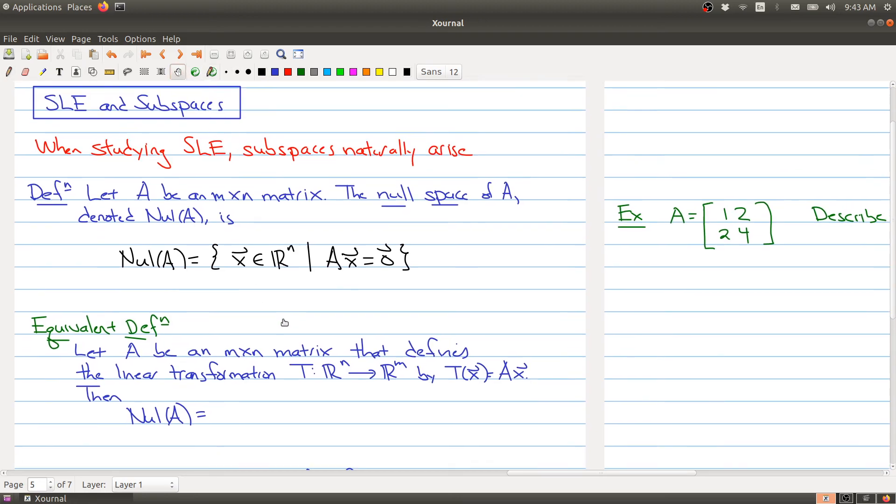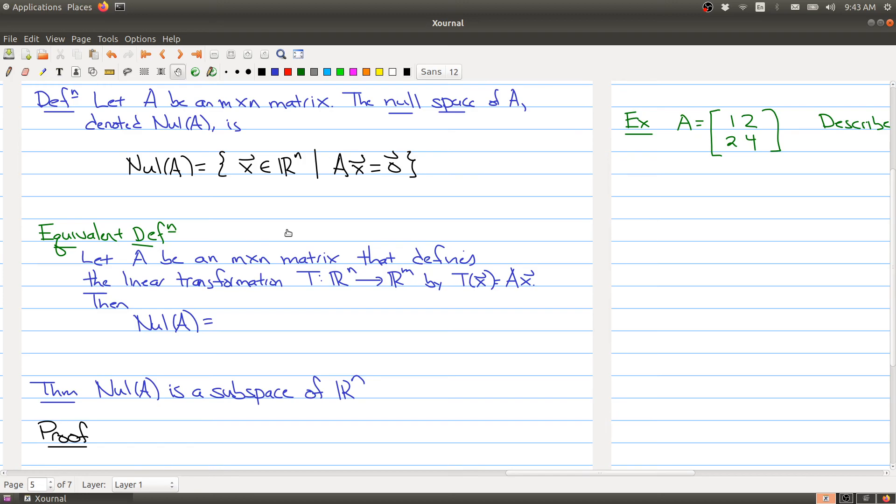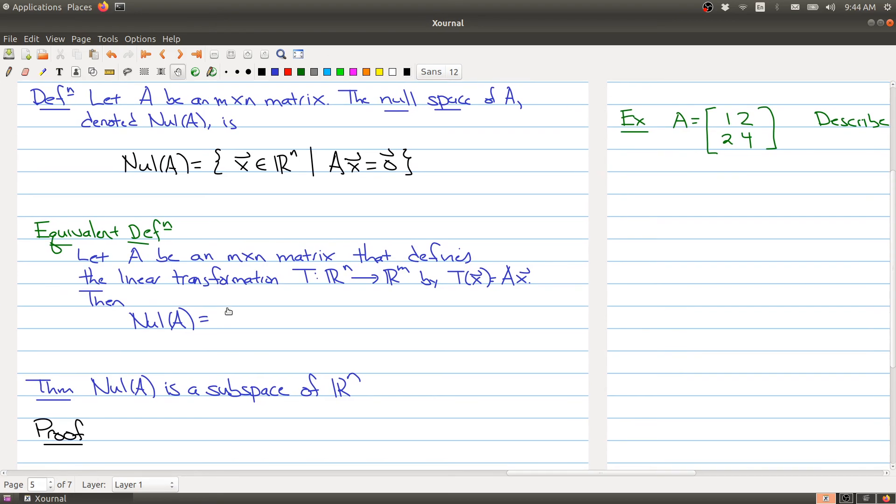There's an equivalent definition here using linear transformations. Let A be an m by n matrix, but now we're going to think of that matrix defining a linear transformation T from R^n to R^m by multiplying that vector on the left by the matrix A. Then the null space of matrix A is the set of all x in R^n such that the vector gets sent to the 0 vector under this map. That's because T(x) equals Ax, which equals 0.